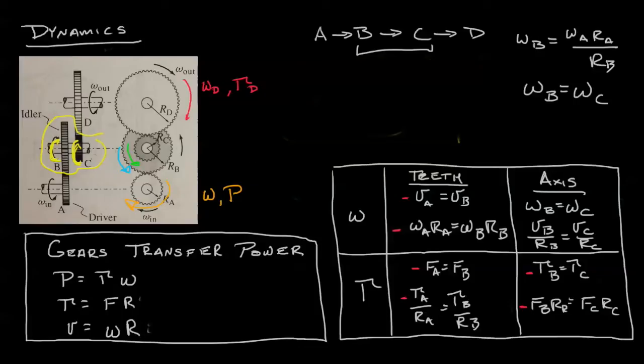And finally, we can figure out a relationship between C and D. They share teeth. So we know omega D equals omega C RC all over RD. That's just like what happens over here. So now that we've found the relationship between each gear and the next gear, let's combine them.